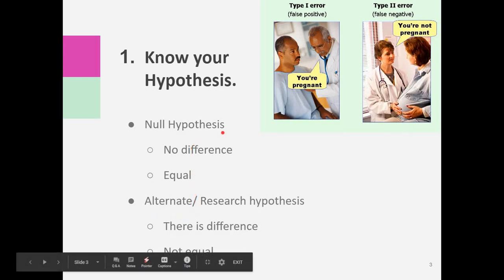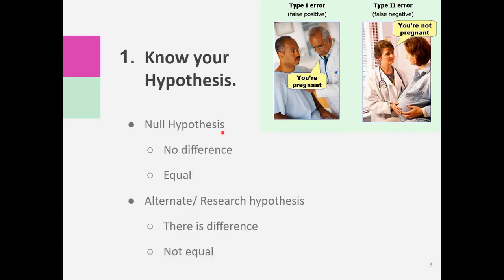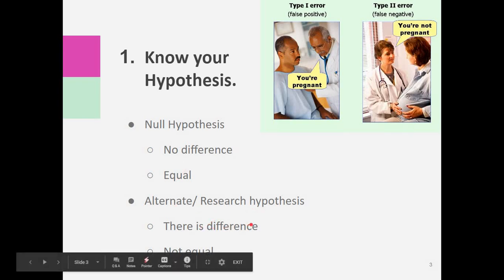If our research objective is estimating prevalence — that is, estimating a mean or proportion — then you cannot calculate a p-value. If you are doing some association, that is you want to study an association between two variables, then you need to use a hypothesis. The null hypothesis says there is no difference between those variables; the alternate or research hypothesis says there is a difference between the variables.